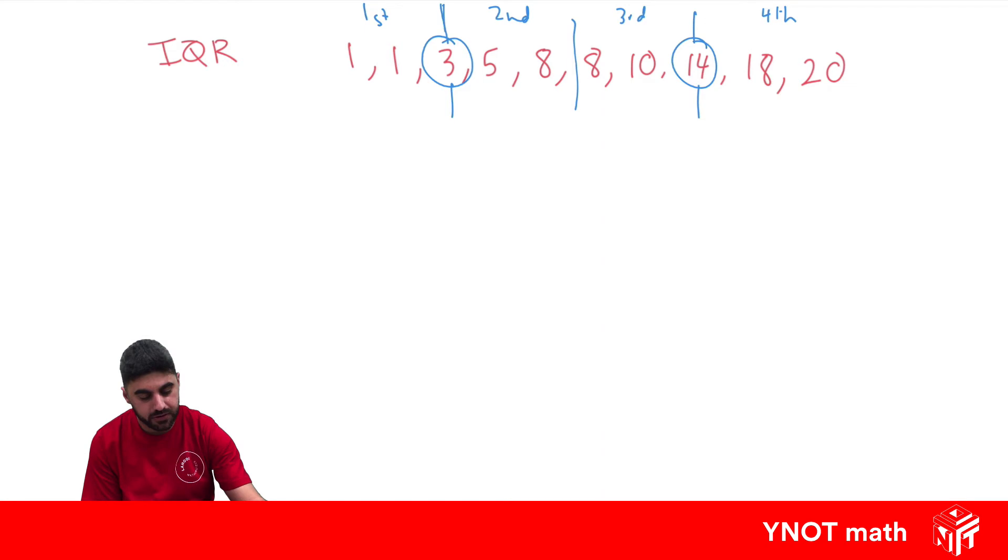So it only requires three cuts to cut a log into four pieces, not four cuts. Then, we call the middle of our first half Q1, or the lower quartile. And we call the middle of our second half Q3, the upper quartile. Q2 is the median in the middle.